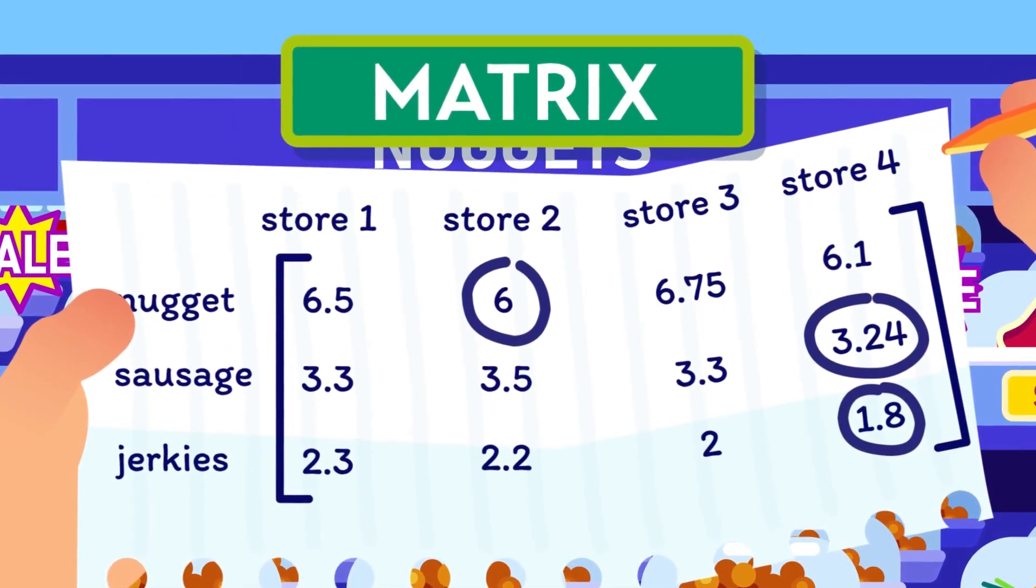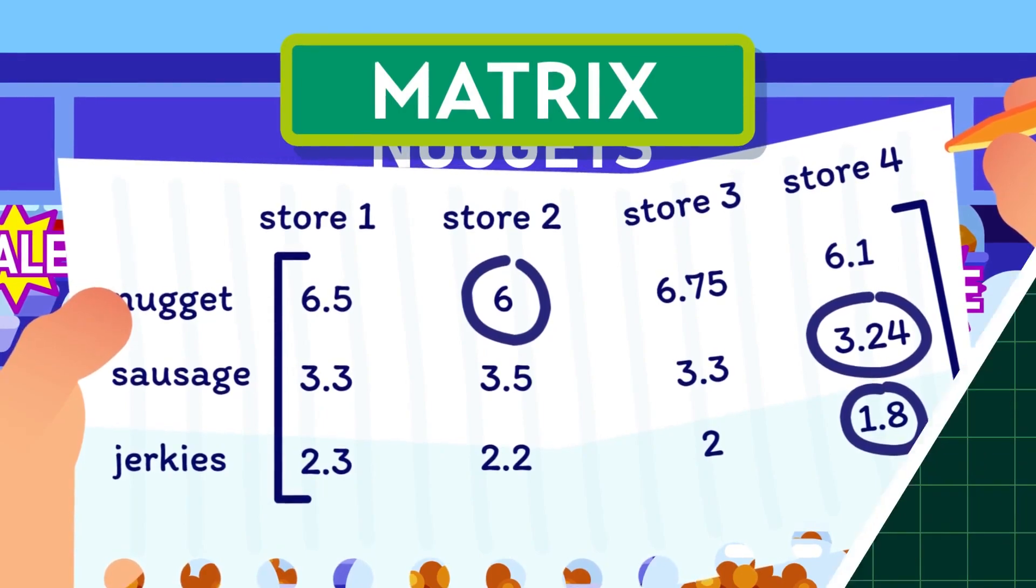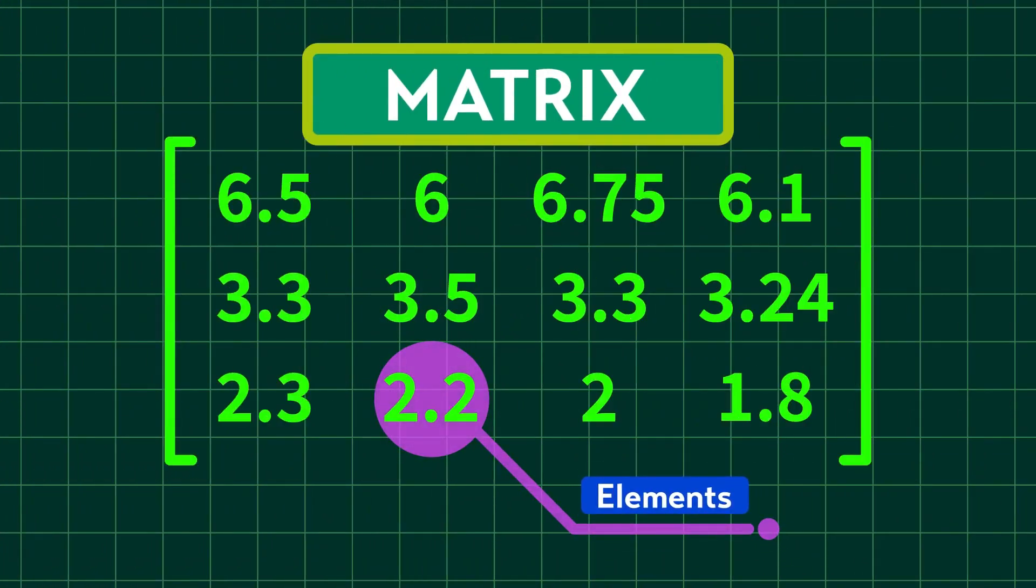This is what we call a matrix, or matrices in plural. The data in the array are called entries or elements, and they can appear as number, function or equation.